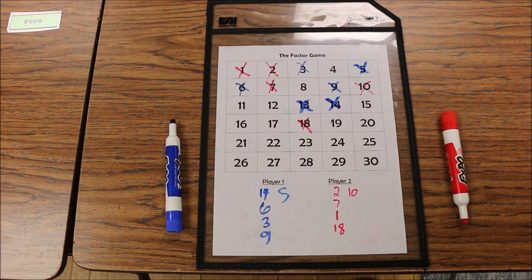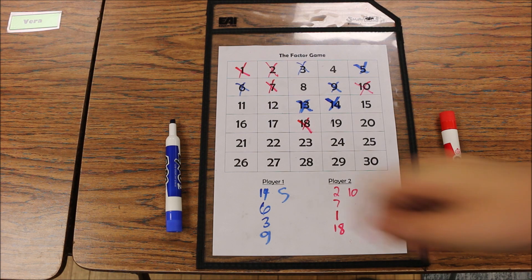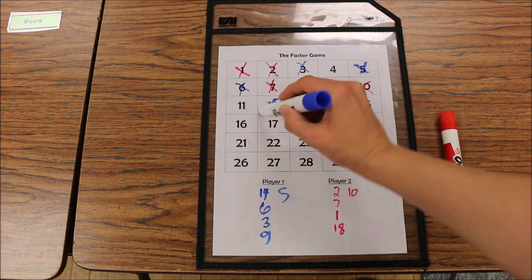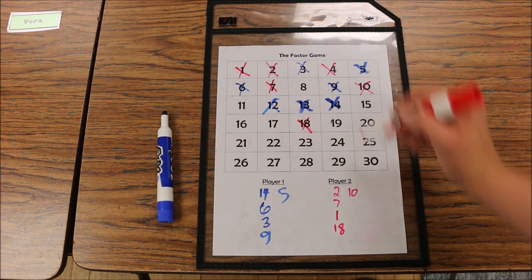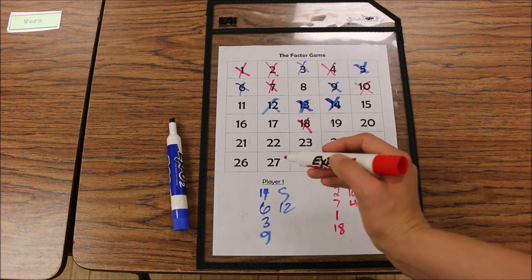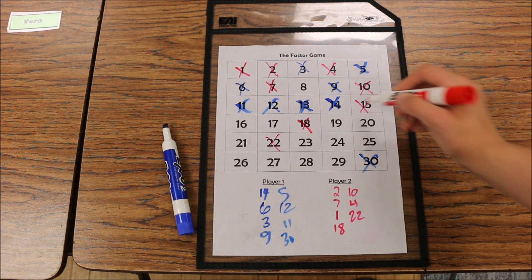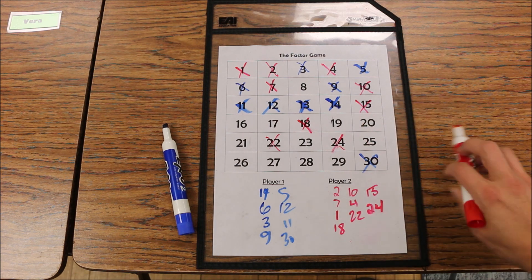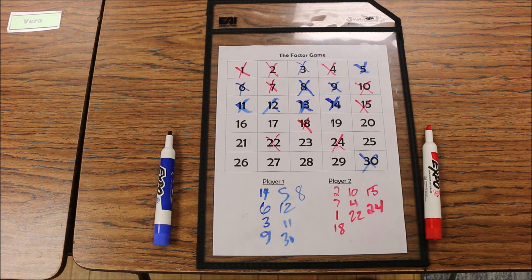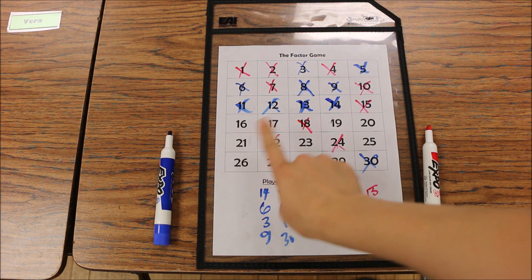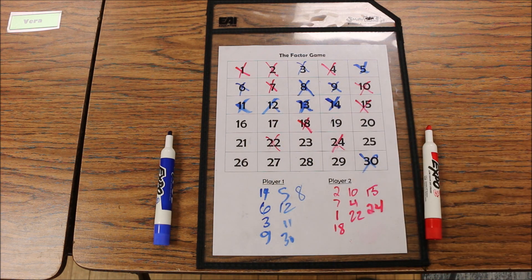You continue like this until all numbers have been taken that have factors remaining on the board. Once no more numbers can be marked because all of their factors have already been taken, then each player will add up their points at the bottom to determine who won.